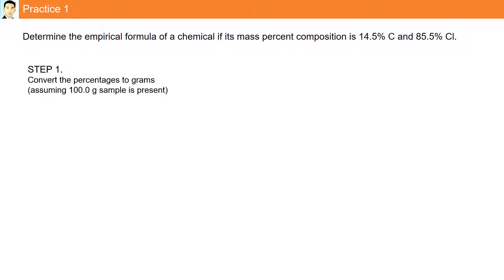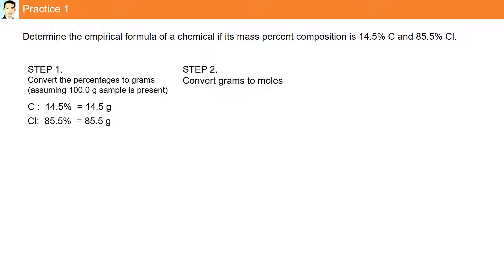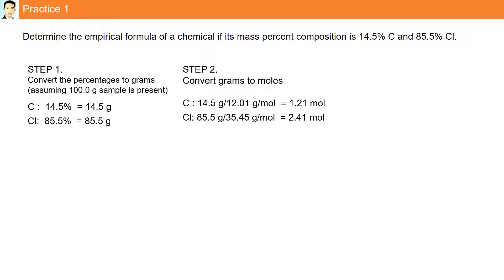The first step is to convert percentages to grams: 14.5% is 14.5 grams and 85.5% is 85.5 grams. The second step is to convert from grams to moles. Carbon: 14.5 divided by 12.01 gives 1.21 moles. Chlorine: 85.5 grams divided by 35.45 gives 2.41 moles. Our formula is C1.21Cl2.41.